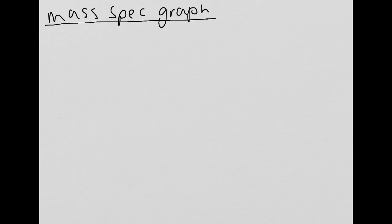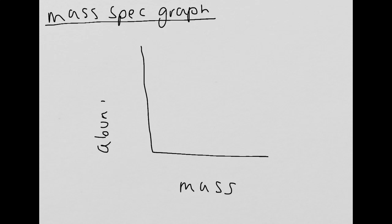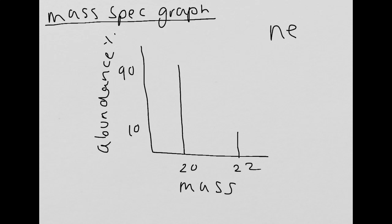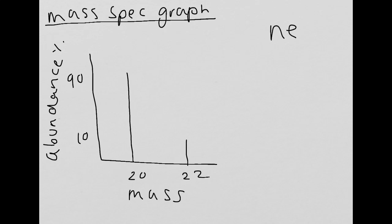Now we move on to the mass spectrometer graph, and basically it'll look something like this when it comes out. It'll have mass along the bottom and abundance up the side, measured in percentage. Taking neon as an example, it has two isotopes: one at mass 20 and one at mass 22, occurring at 90% and 10% respectively. It would have two peaks representing the isotopes. From this graph, we can calculate the relative atomic mass using the equation: (abundance × mass of isotope) + (abundance × mass of isotope), divided by 100.